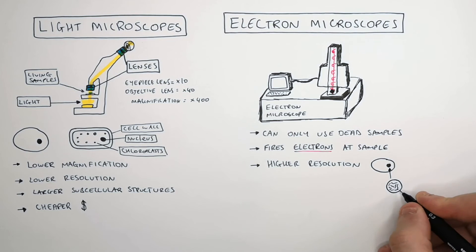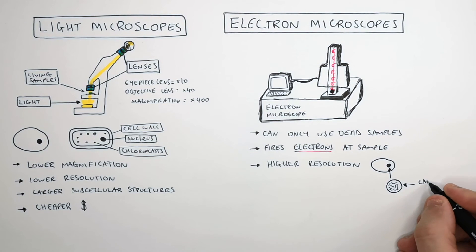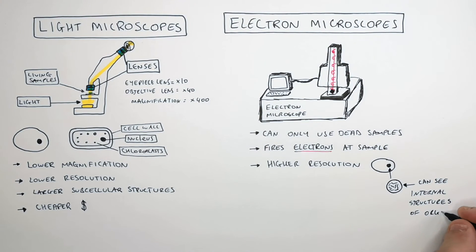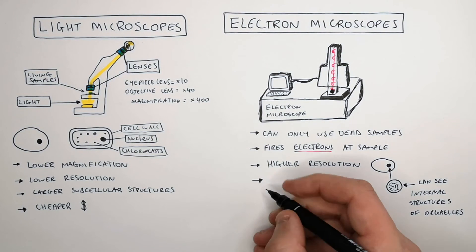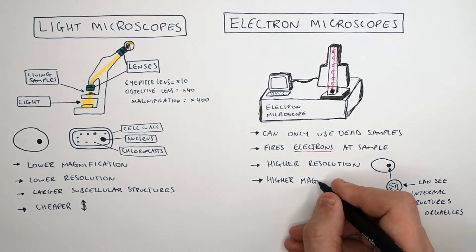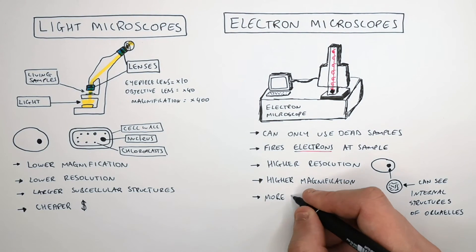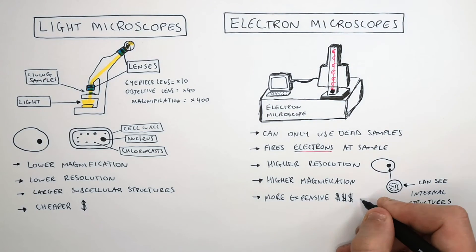The higher resolution and higher magnification means you're able to see smaller structures. You can see inside the nucleus of a cell, and see the structures of a ribosome and mitochondria. Electron microscopes have both a higher resolution and a higher magnification, whereby the highest magnification can be ×1,000,000. They are obviously much more expensive than light microscopes.